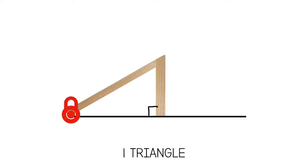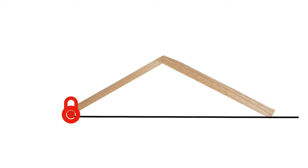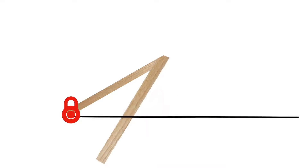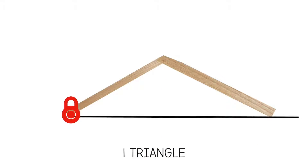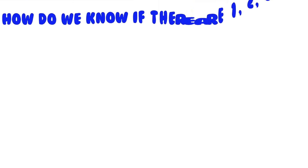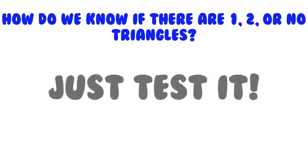Now, let's say this leg we were given was a lot longer — even longer than the other leg. If we swing it here, it connects and makes a triangle, but if we swing it further, it never connects again, so there's just one triangle. Now you should be able to see how we can end up with one triangle, no triangles, or two triangles. But we don't have to memorize all that stuff from the beginning of the video — we just need to test it.